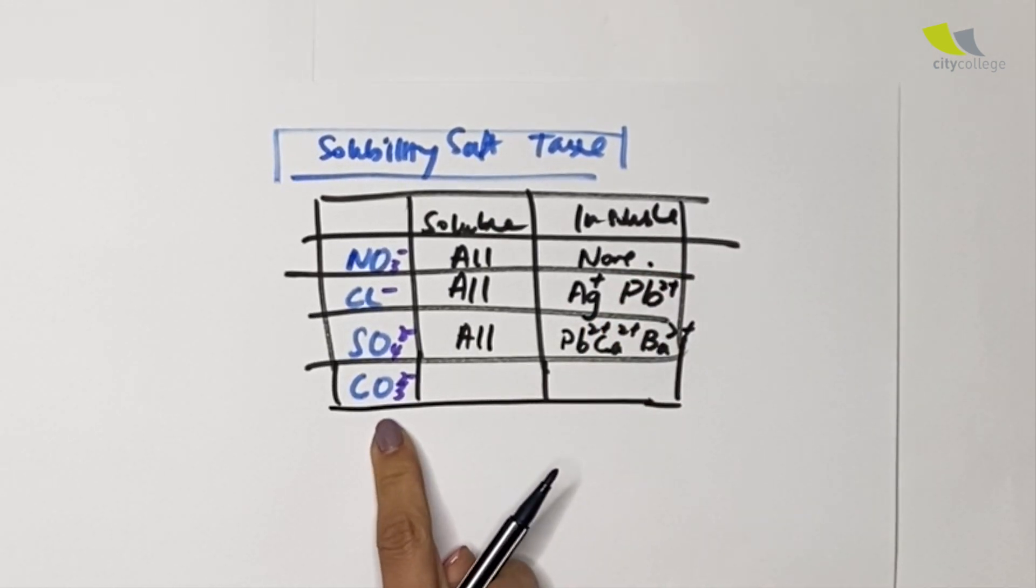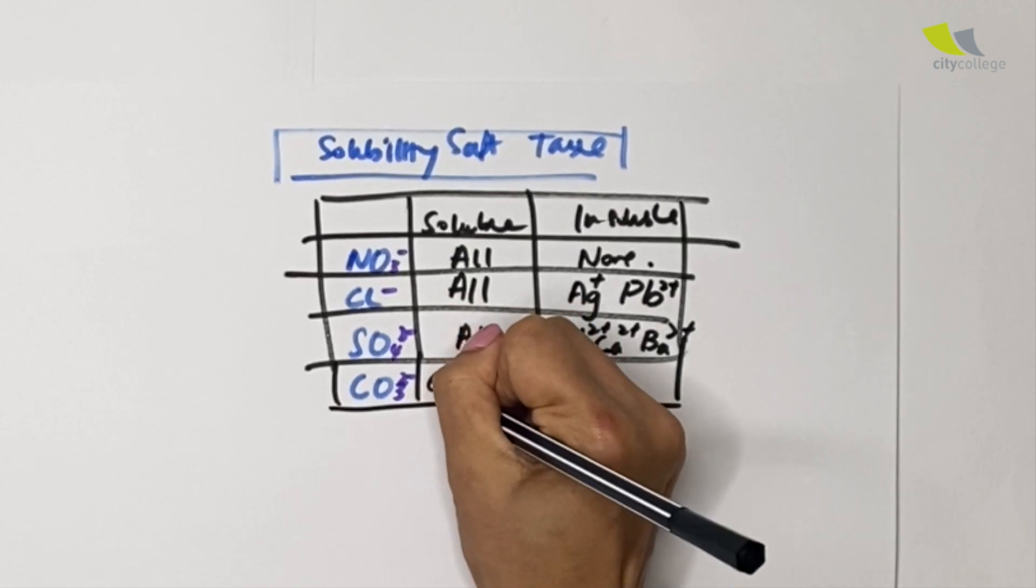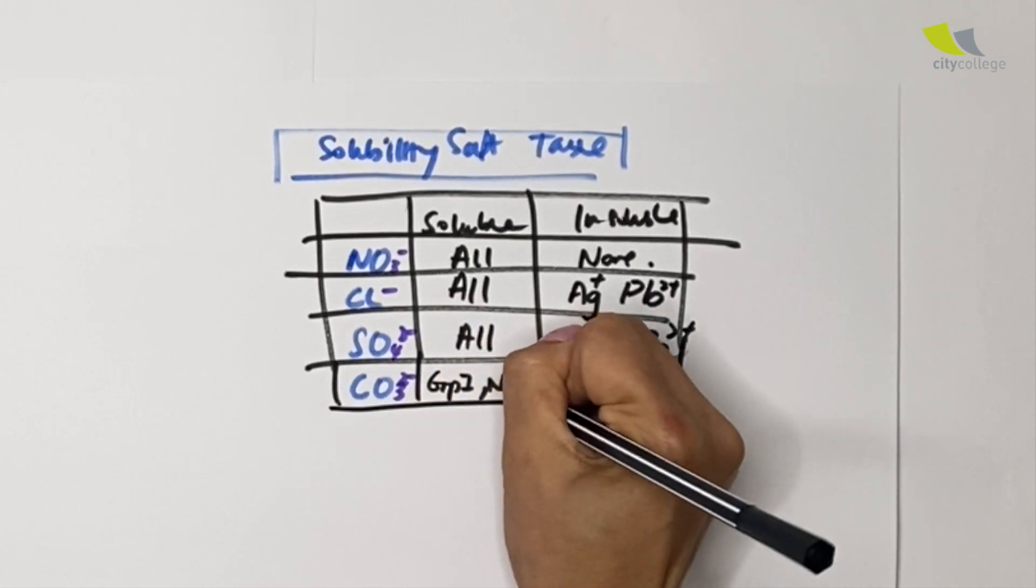Next up carbonate. For carbonate this is a special one. Remember they are soluble for Group 1 and ammonium; the rest are absolutely insoluble.